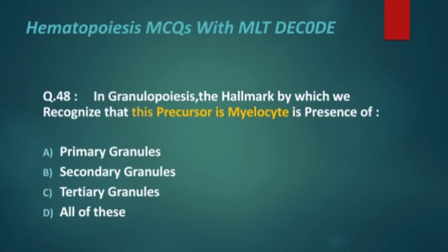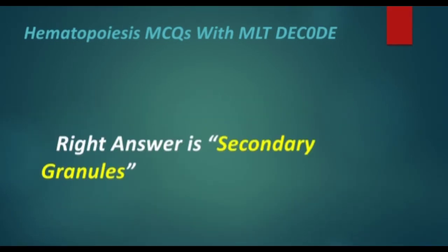Next, MCQ 47: In granulopoiesis, the hallmark by which we recognize that a precursor is a myelocyte — its presence of which granules? Options are: primary granules, secondary granules, tertiary granules, and all of these. The right answer is secondary granules.